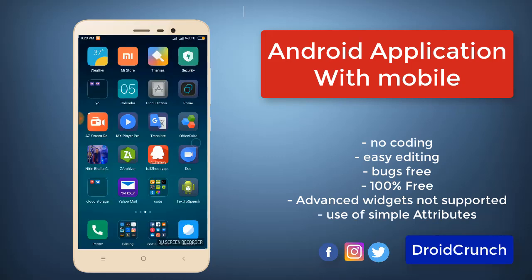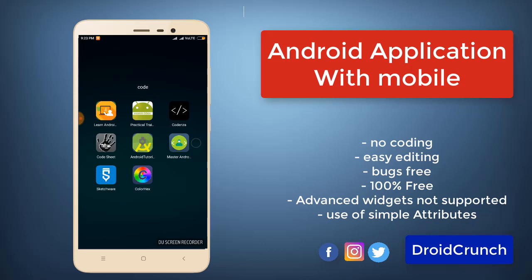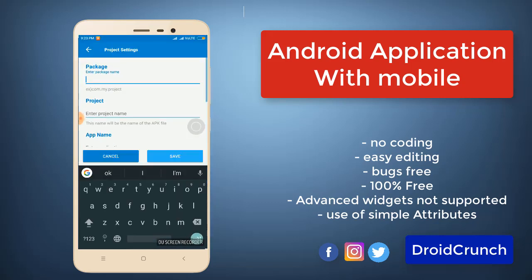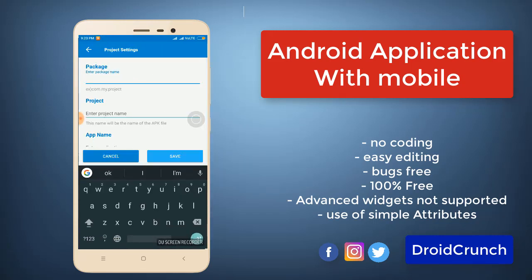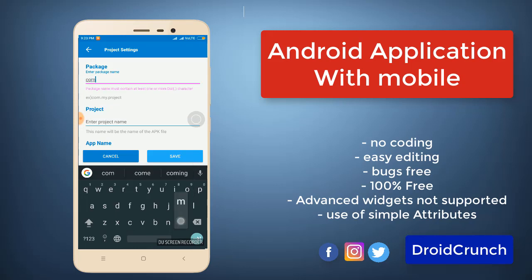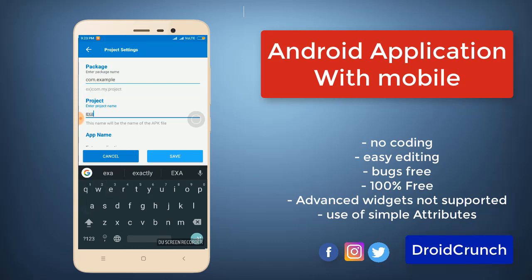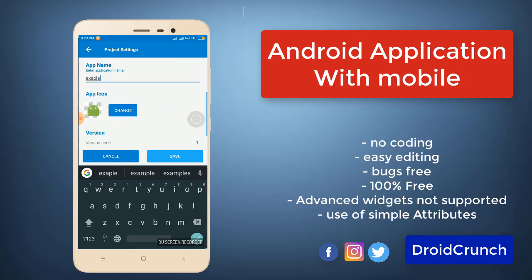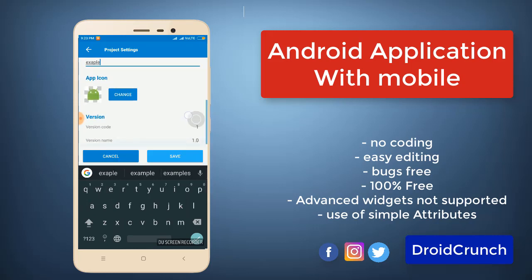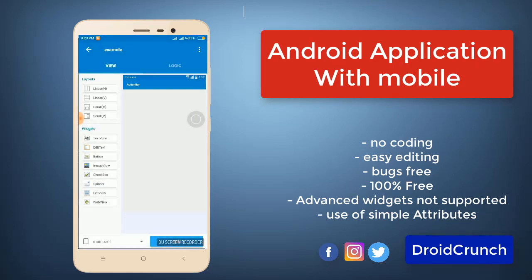Hello guys, this is Lokesh Kapoor from Roidcon, and today we are going to make a cool application with Sketchware, which is available on Google Play Store. I am clicking on the floating action button and this is our activity where I can name my package starting with 'com dot'. I will name it 'example', and the project name is 'sample example'. You can change the app icon — I am just leaving it here. Let's start.